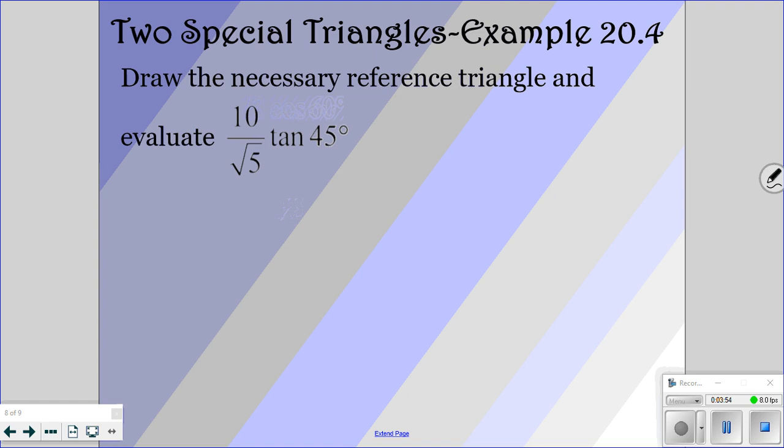So now let's do this last one, tangent of 45. So we have a 45 degree, a 45 degree, and then 1, 1, and square root of 2. And so tangent is opposite over adjacent, so 1 over 1. So tangent of 45 is just going to be 1.